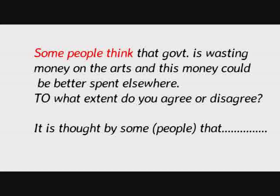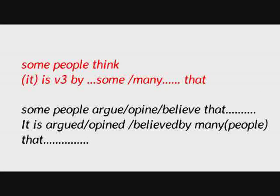What is the structure of a passive sentence? The structure is: 'is' followed by the past participle — that is, 'is' plus the third form of the verb.